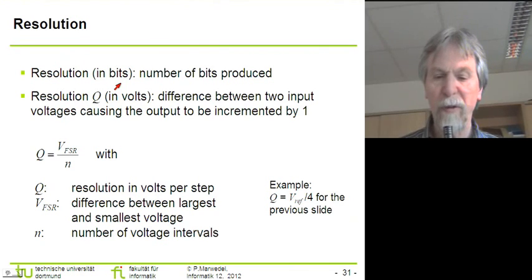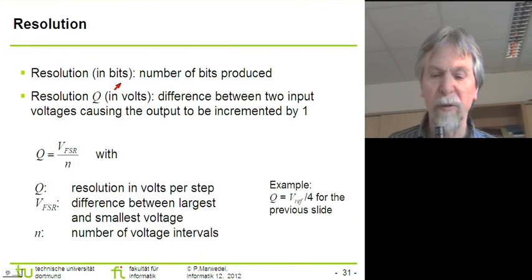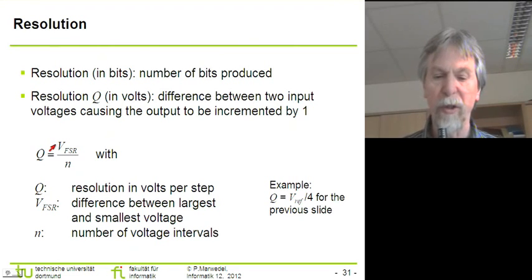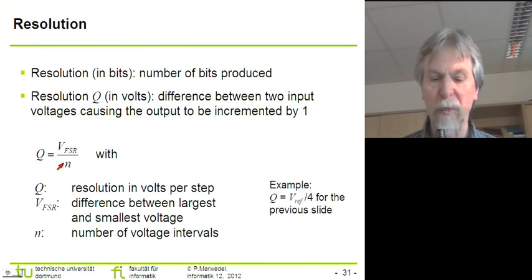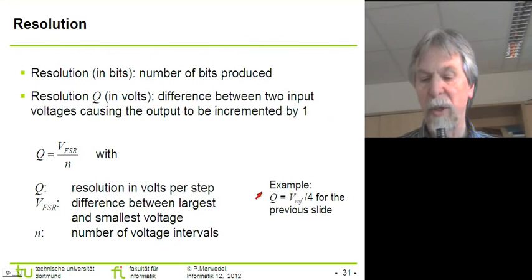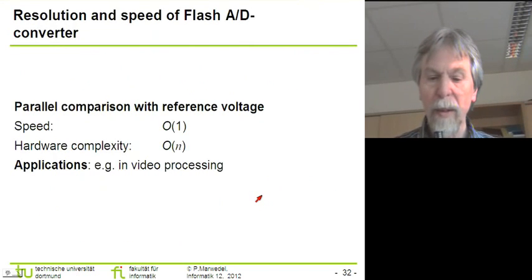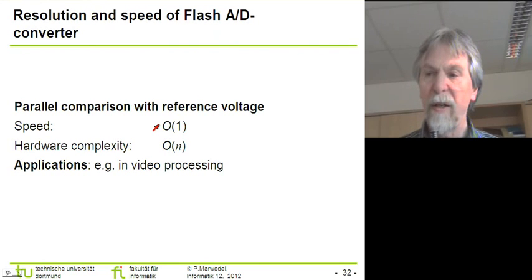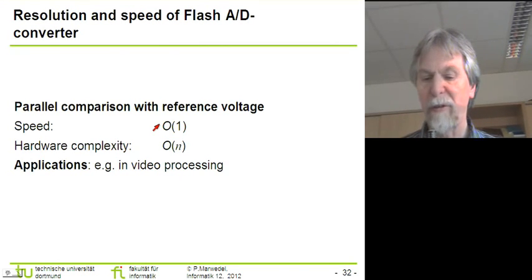The first measure is pretty obvious. In the previous example, the resolution in bits was two because we were generating two bits. The resolution in volts corresponds to the voltage range we are able to convert. In this case, it is equal to the reference voltage divided by the number of intervals. That means in the previous slide, the resolution in volts is one quarter of the reference voltage. Coming back to the issue of complexity, this device has a speed — more precisely a delay — which is of constant order.